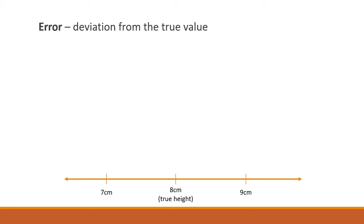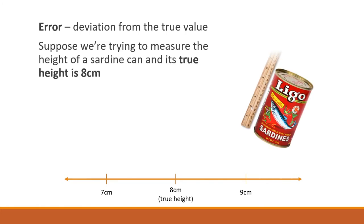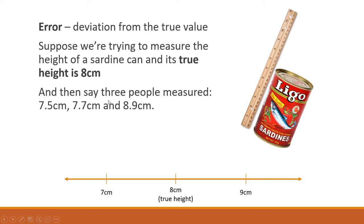Let's define what an error is. An error is a deviation from the true value. If you measured it a little bit wrong, that little bit wrong is the error. Suppose we're trying to measure the height of a sardine can and its true height is 8 centimeters.